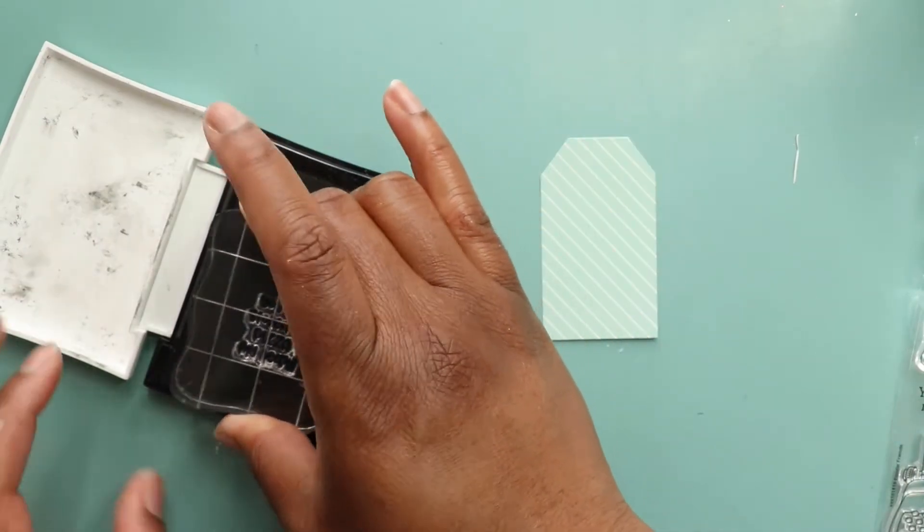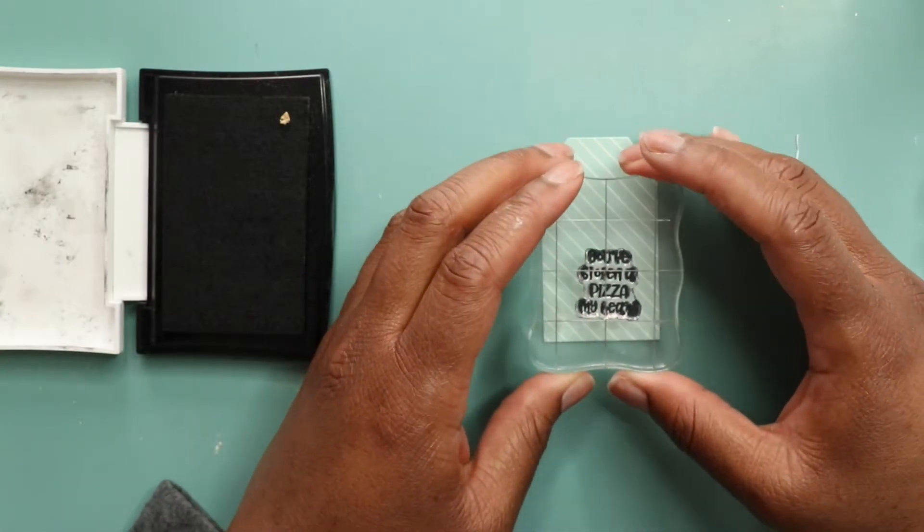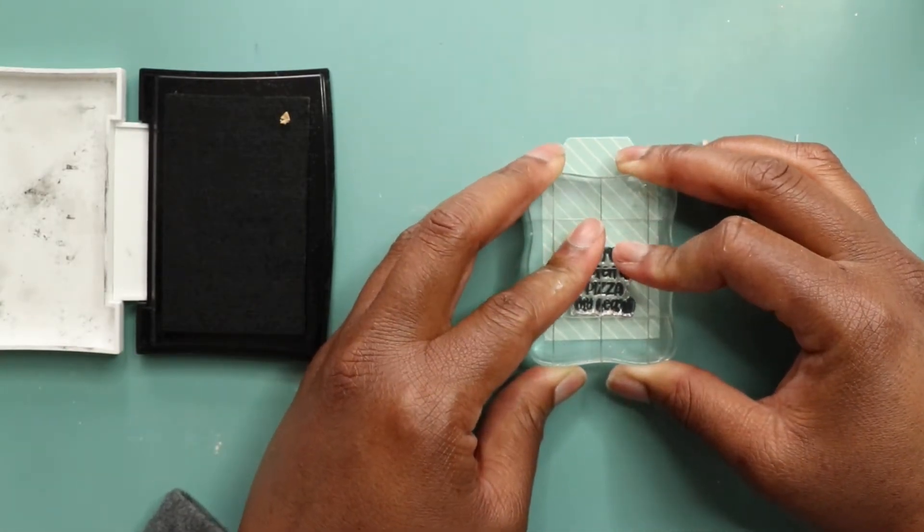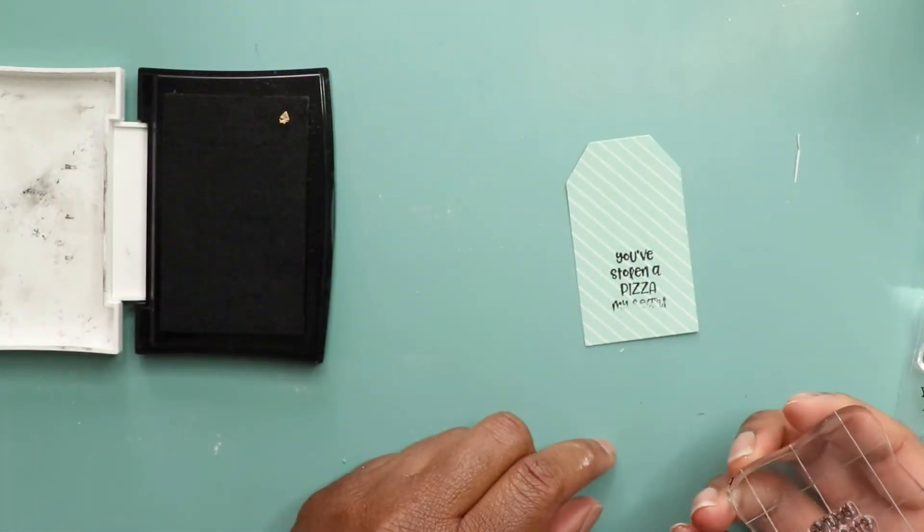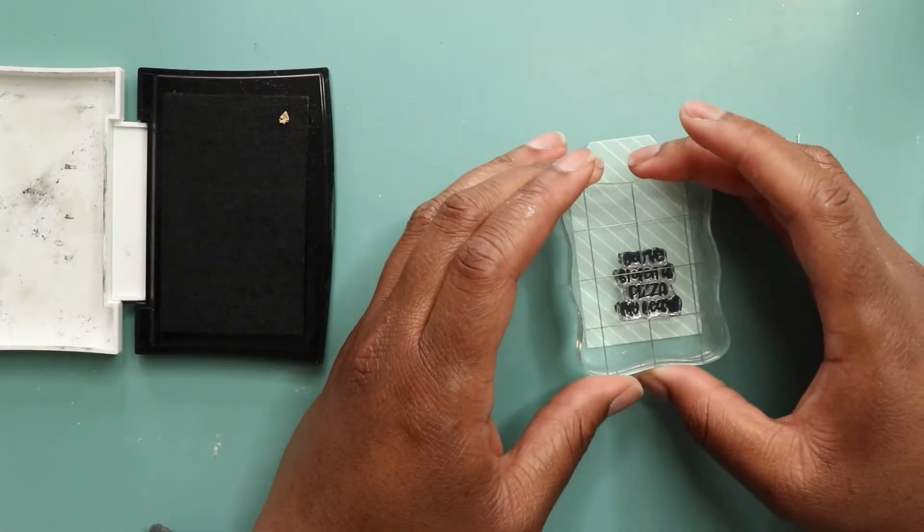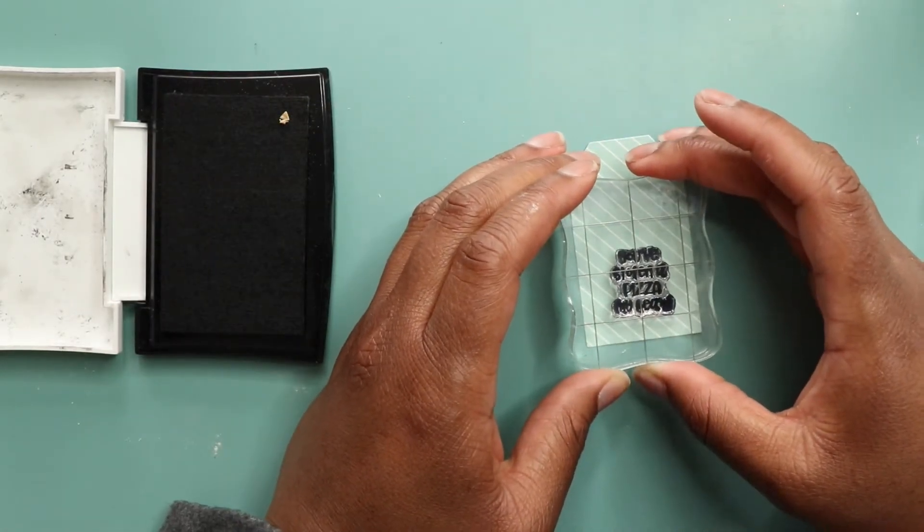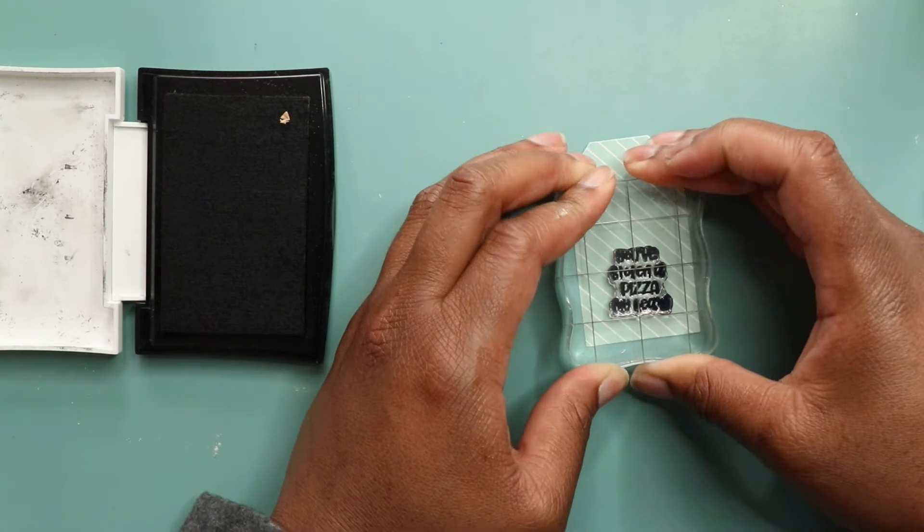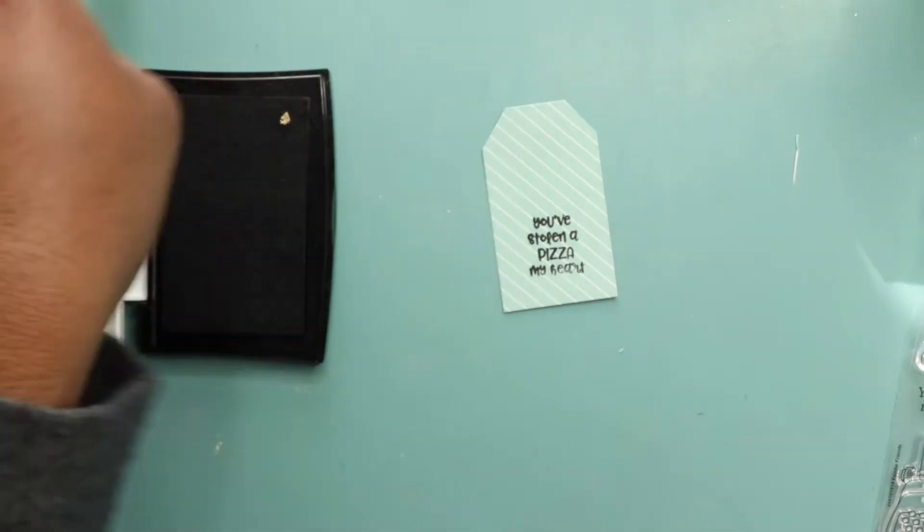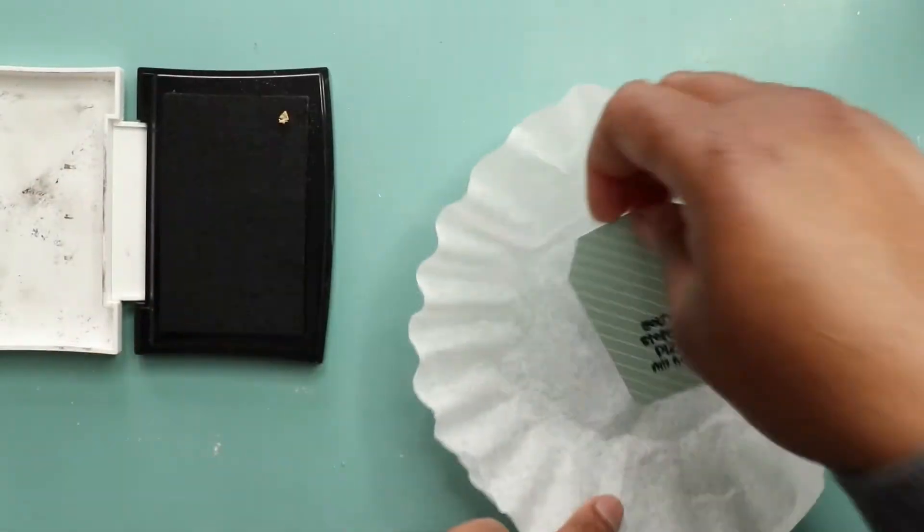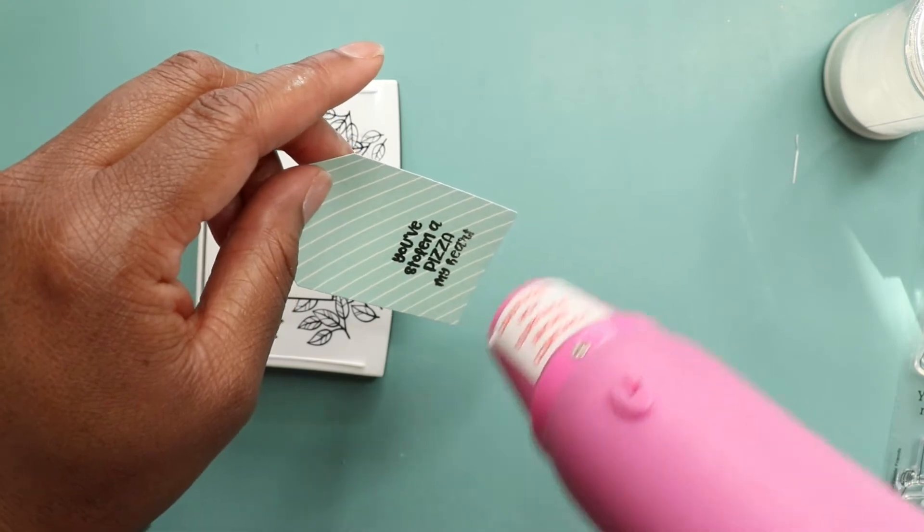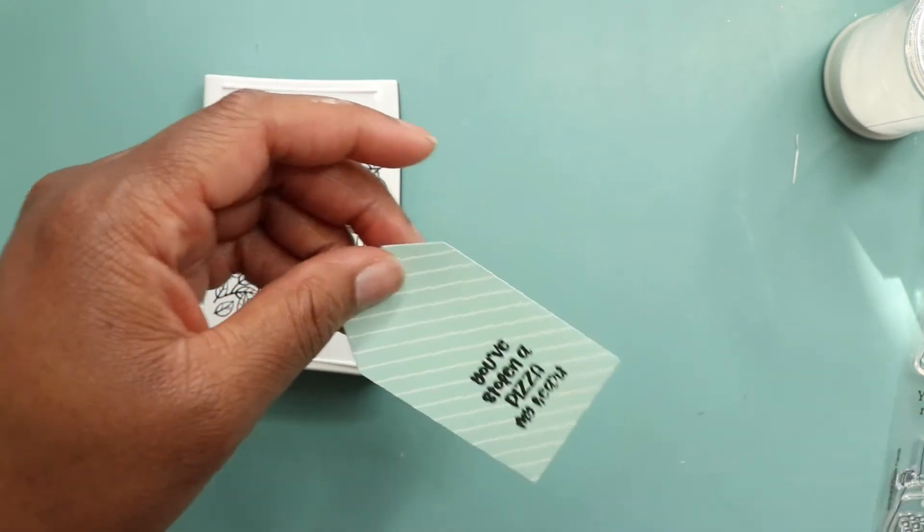I'm using some paper from that kit and the stamps. First up, I'm using the sentiment that says 'you've stolen a piece of my heart' and of course it didn't stamp out right, so I had to go back over and do it again, which is the beauty of a clear stamp because it allows you to do that. I'm going to heat emboss it with some clear Recollections embossing powder.